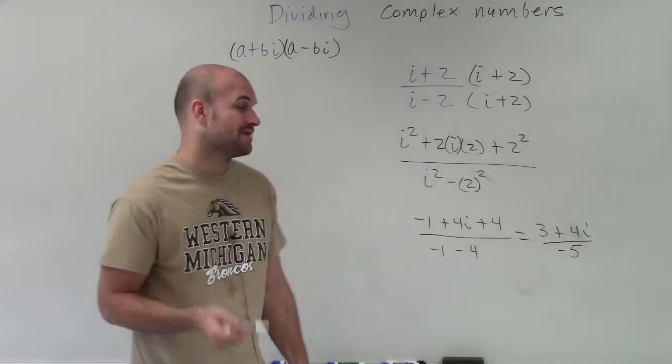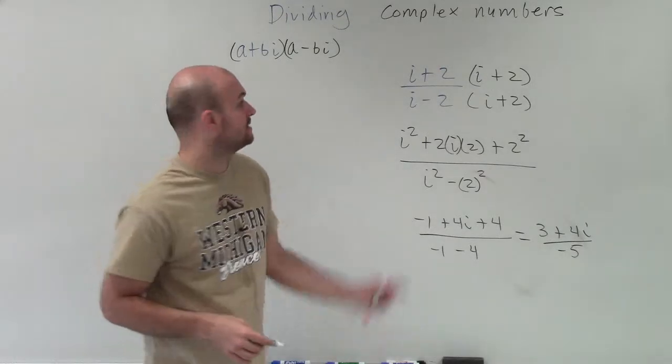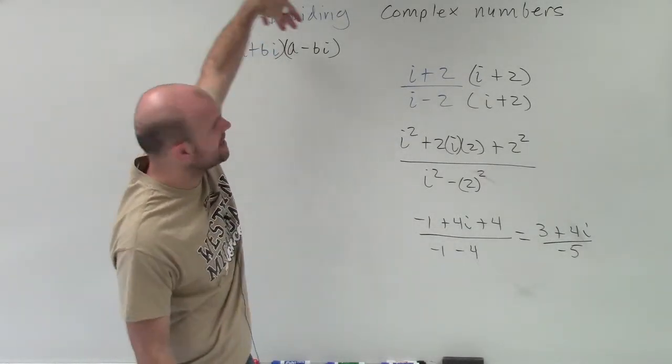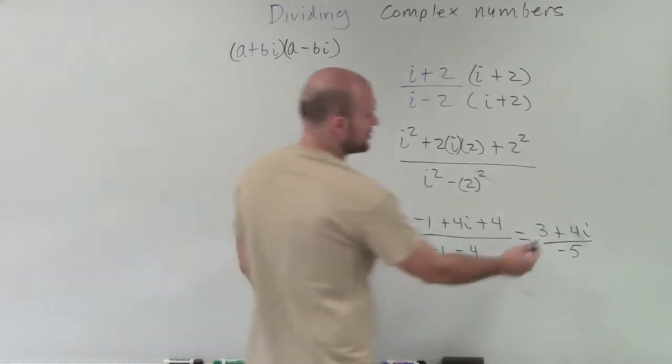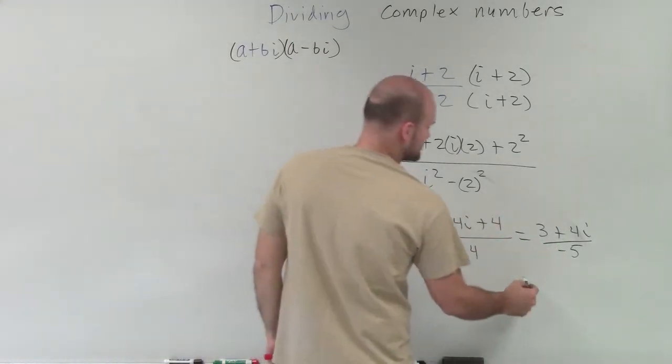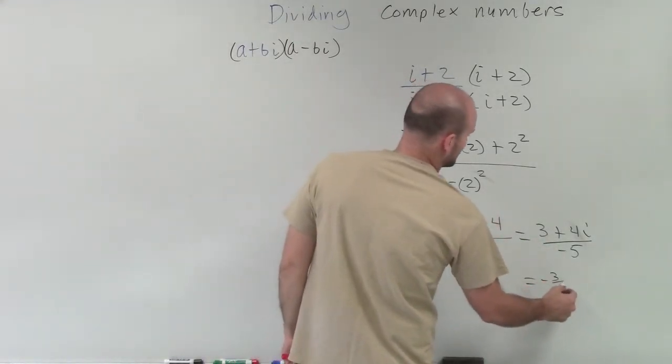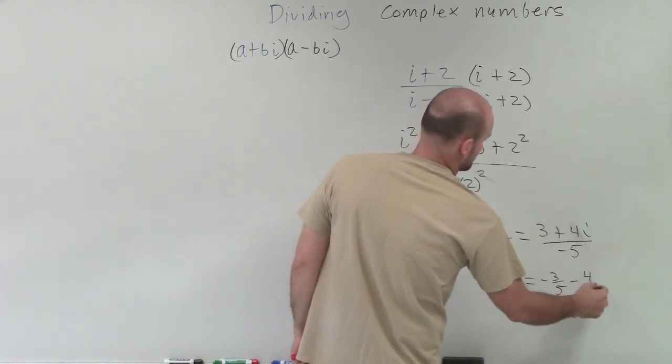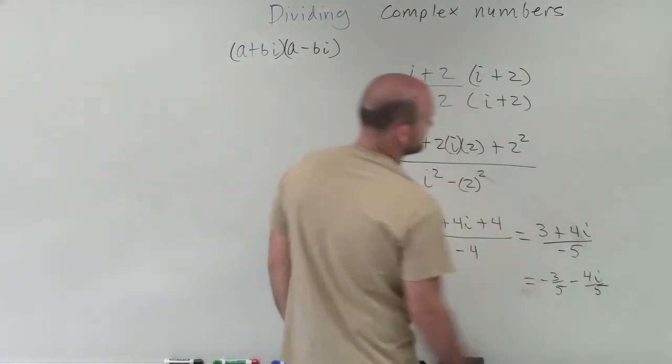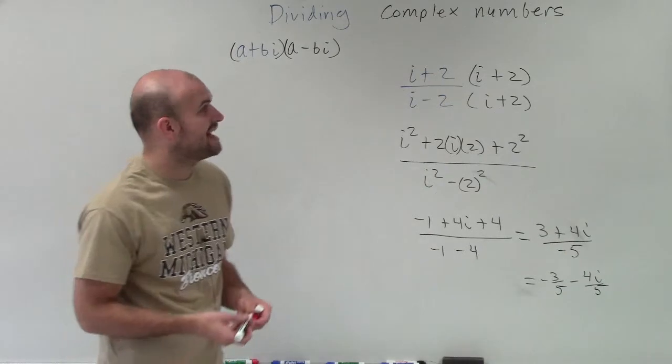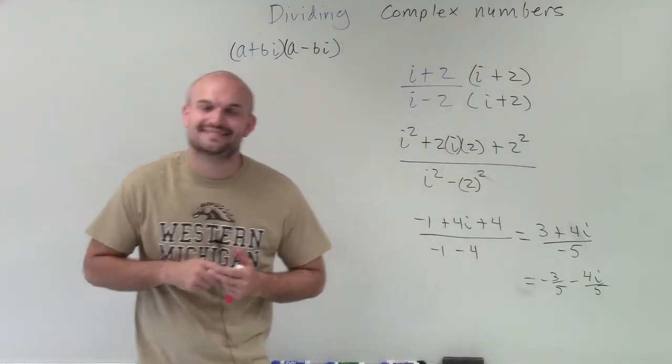Now, finally, I need to write my answer as a complex number, so a plus bi. So therefore, I divide the negative 5 into both those terms. So I have a negative 3 fifths minus 4i over 5. So there you go, ladies and gentlemen. That is how we write our complex number. Thanks.